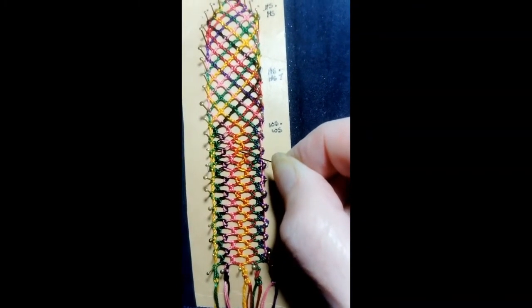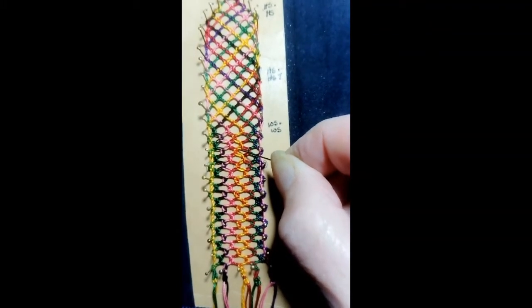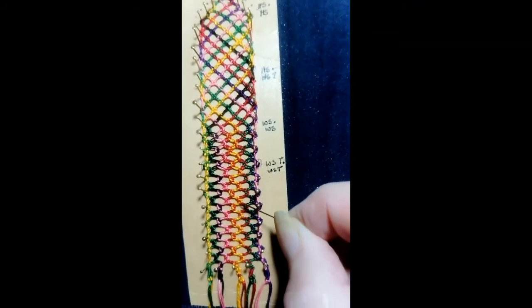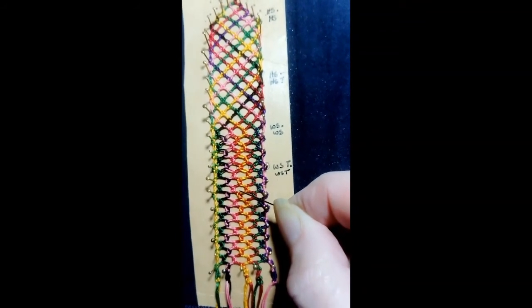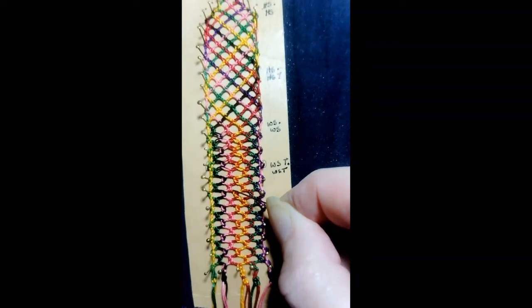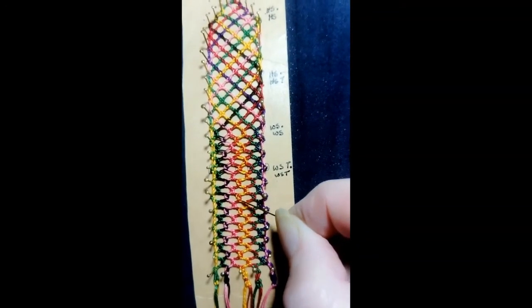So the hole stitch or cloth stitch pin cloth stitch gives us this sort of oval shape, and the cloth stitch or hole stitch twist, pin, hole stitch twist, pin gives you this much more rectangular shape.